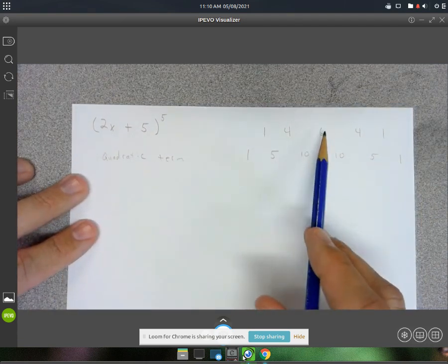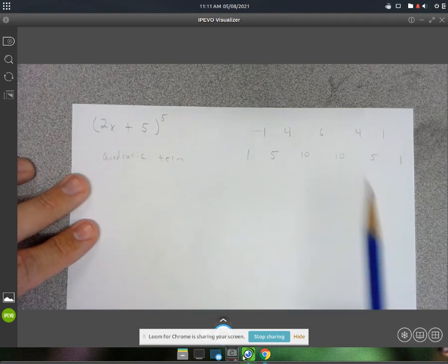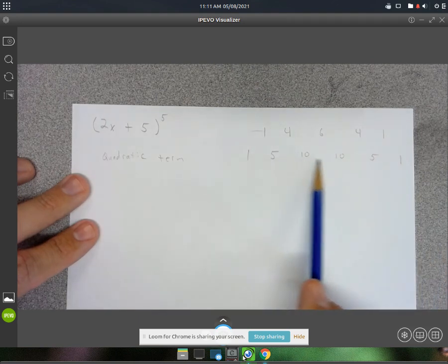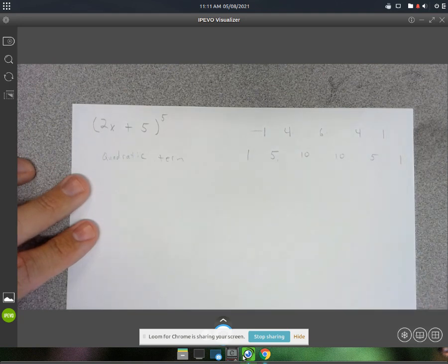So I kind of cut off Pascal's triangle here, but this was that row 4 that I had in that last video, and then I used it to create my 5th row, so 1 plus 4 is 5, 4 plus 6 is 10, 6 plus 4 is 10, and so on.